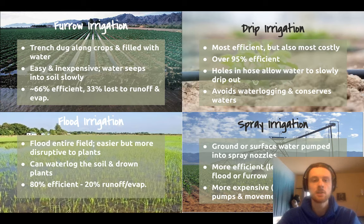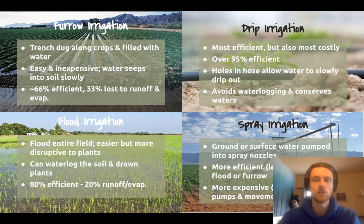Flood irrigation is also very cheap and easy — it's just like what it sounds like, flooding your field with water. The problem is this can cause water logging in your soil, which we'll talk about shortly. This method is really only suitable for certain crops like cranberries or rice that can tolerate totally waterlogged soil.